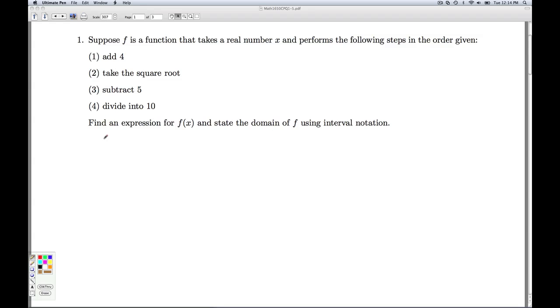Once we have that formula, we're asked to find the domain and express it using interval notation. So we just do one step at a time. My input, my initial input, is x. And so the first step, we're supposed to add 4 to that. So we write that as x plus 4. For the second step, we take this and move it to the next step.